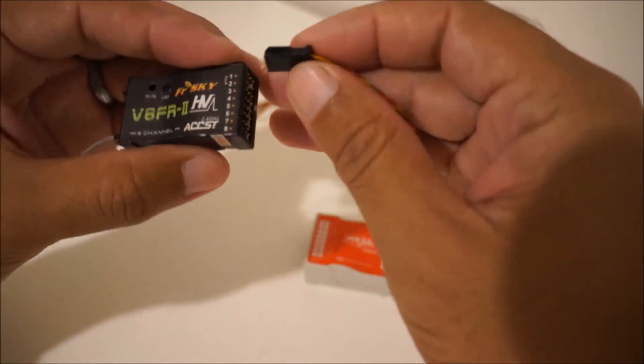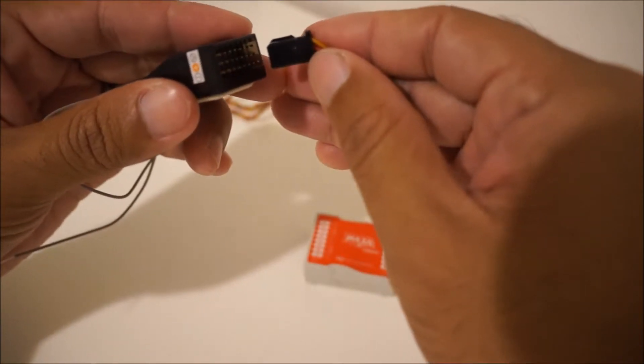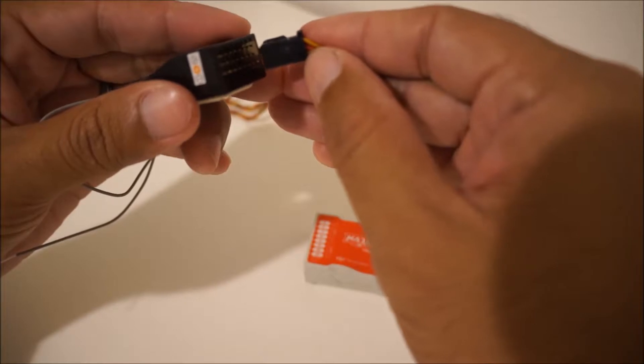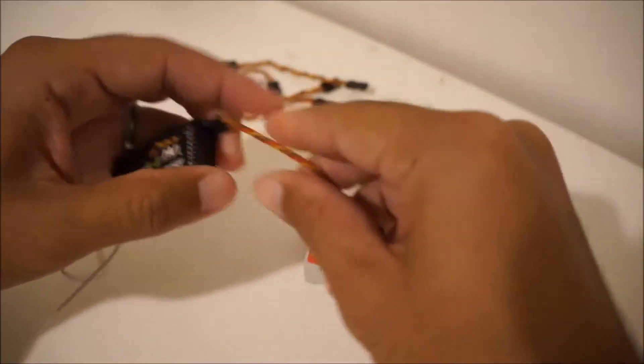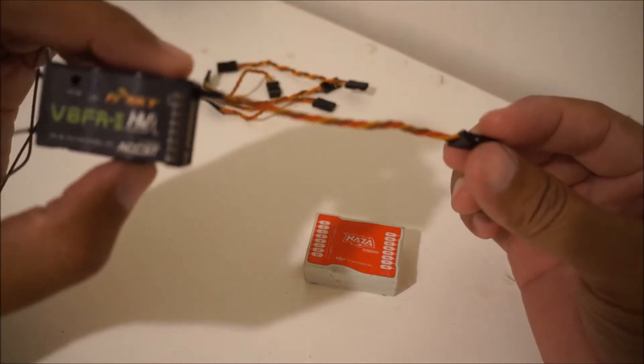So like I said, we're going to go from one. So my positive is in the middle and ground is in the bottom, so I'm plugging that in correctly. So one on my radio is the aileron.